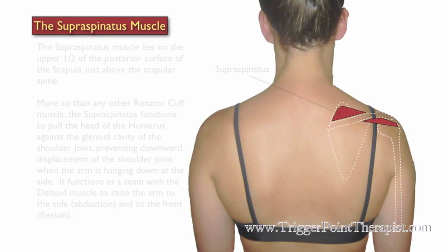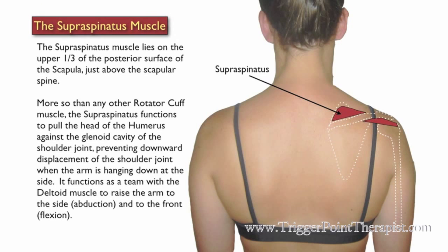The supraspinatus muscle lies on the upper third of the posterior surface of the scapula, just above the scapular spine. More so than any other rotator cuff muscle, the supraspinatus functions to pull the head of the humerus against the glenoid cavity of the shoulder joint, preventing downward displacement of the shoulder joint when the arm is hanging down at the side.